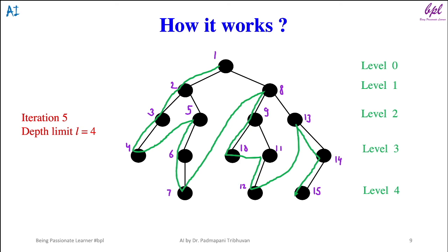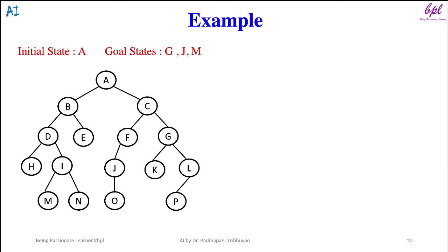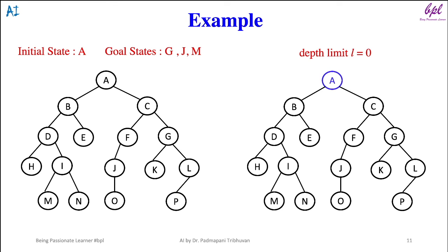Now let us see an example to get more clarity. Consider the tree shown on the slide representing the search space of a problem. The initial state or start state is A and goal states are G, J, and M. The algorithm will start with L equals zero. Node A will be visited; as L is zero, it will be considered that A has no successors.